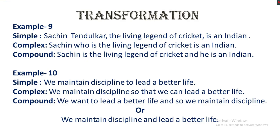Here, 'maintain' is the only finite verb, so there is only a single clause and it's a simple sentence. 'To lead a better life' is an infinitive phrase. If we turn this infinitive phrase into a clause, we get the complex or compound. 'To lead a better life' implies purpose. There are four words that imply purpose: 'to,' 'with a view to,' 'in order to,' and 'for.' We can use the subordinate conjunction 'so that' to make it complex: we maintain discipline so that we can lead a better life. For the compound: we want to lead a better life and so we maintain discipline. Or best: we maintain discipline and lead a better life.